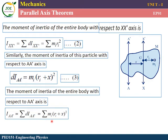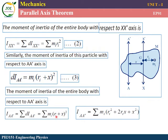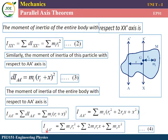I-AA prime equals summation of mi into (ri plus x) squared. Expanding using (a+b)² = a² + 2ab + b²: this gives summation of mi ri squared, plus summation of mi into 2ri x, plus summation of mi into x squared. Equation number 4 is now established.